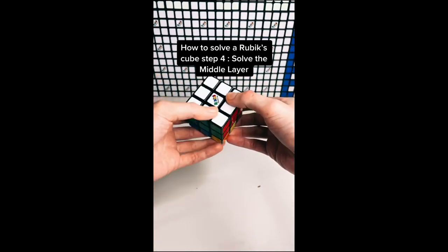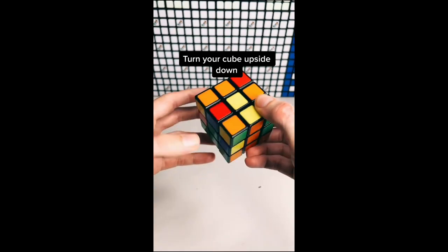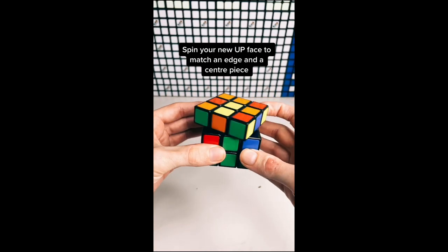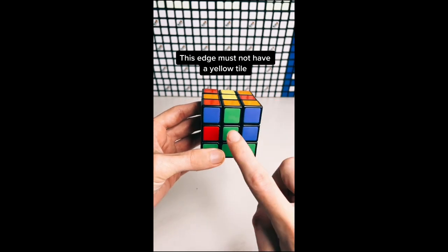How to solve a Rubik's Cube step 4: Solve the middle layer. Turn your cube upside down. Spin your new up face to match an edge and a center piece. This edge must not have a yellow tile.